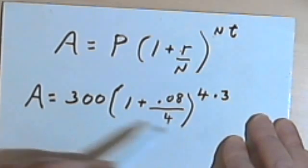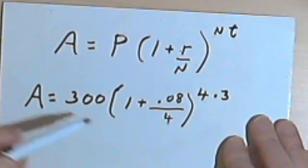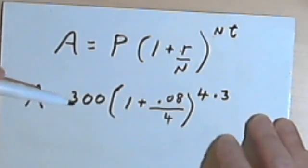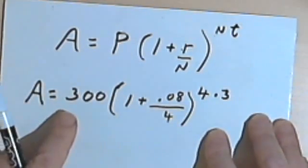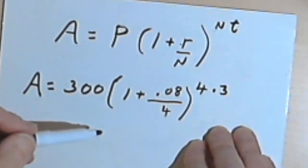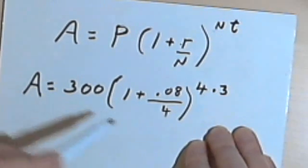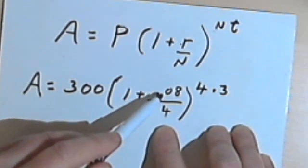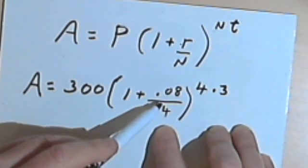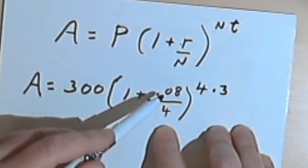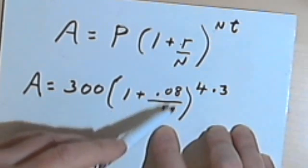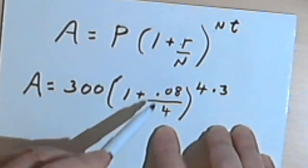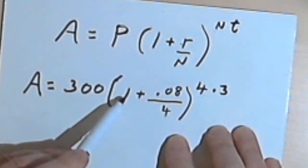Now, you can put this in your calculator, but rather than put it in as one big equation, my advice would be this, because you don't want to have too many parentheses involved. First take this fraction, 0.08 divided by 4, and figure out what that is. You can do that in your calculator and you'll get a number, you'll get 0.02, but whatever you get, add the 1 to it.